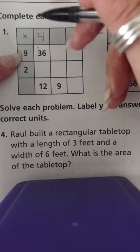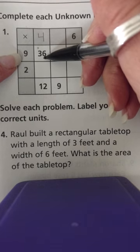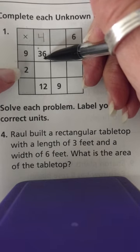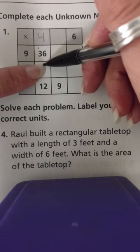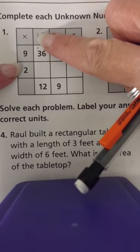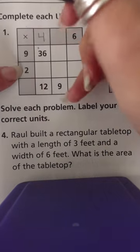Nine times four is 36. Now here I have the two factors, two times four. Two times four is equal to eight.